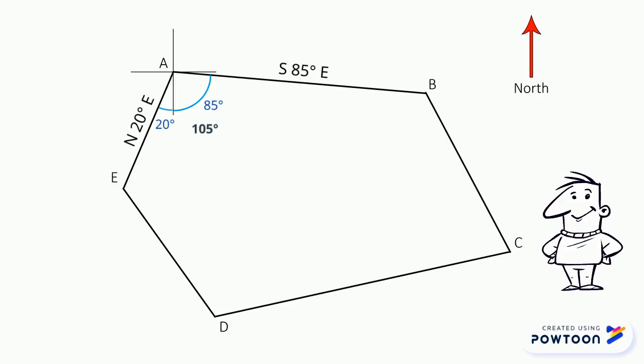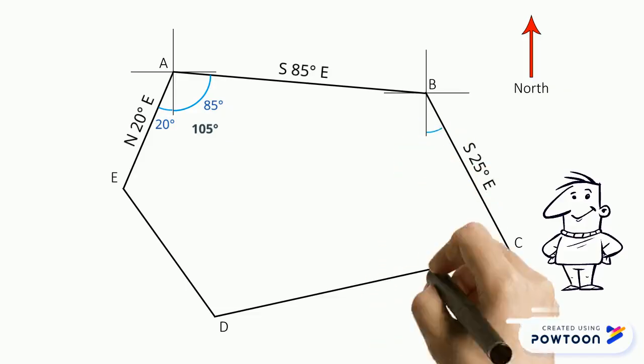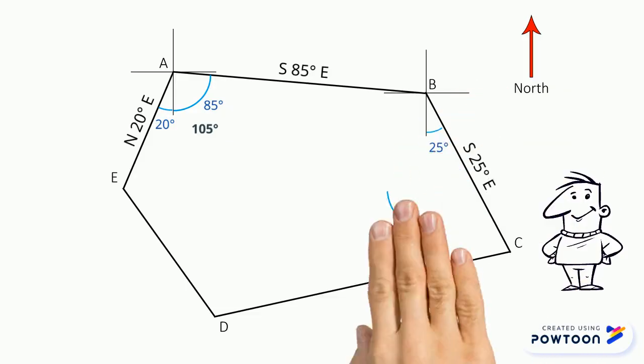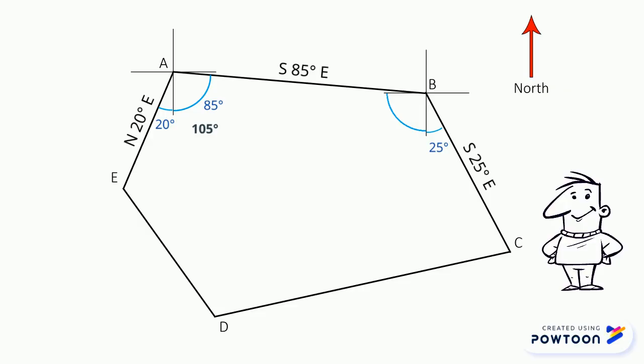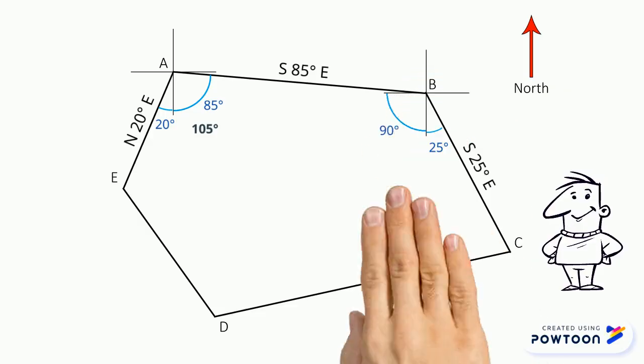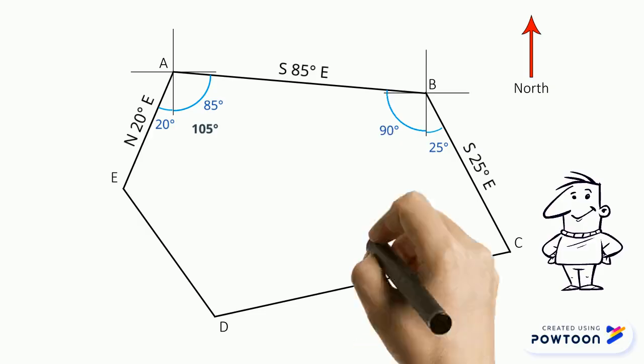The bearing of point B towards point C is south 25 degrees east. Therefore this part of point B is 25 degrees. And since this is a right angle, it has the measurement of 90 degrees. Lastly, this part here measures 5 degrees.